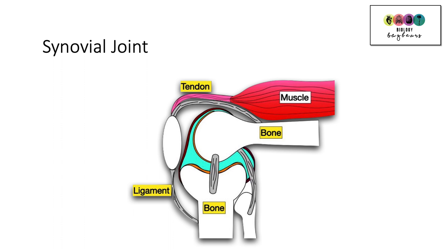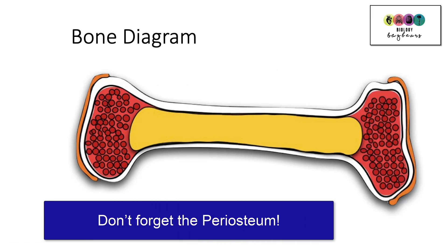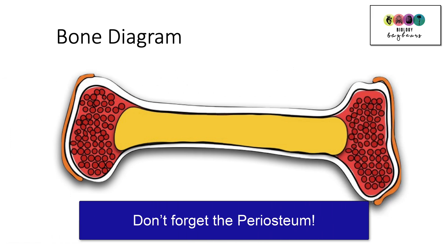Can you draw and label the synovial joint? And remember, there are simpler versions of this you could draw. Can you draw and label all the parts of the bone, including the periosteum, that protective membrane?